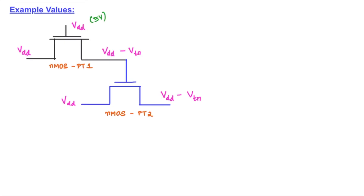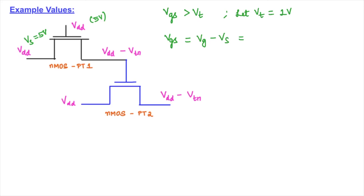Applying specific gate voltage of 5 volts — since VDD is a high input voltage, it will turn on the N-MOS pass transistor — and the source voltage VS is also VDD = 5 volts. For the first N-MOS pass transistor to turn on, VGS must be greater than Vt. With Vt = 1 volt: VGS = VG minus VS = 5 minus 5 = 0 volt. Since 0 is less than 1 volt, the condition is not satisfied, so the N-MOS pass transistor 1 is in an off condition.